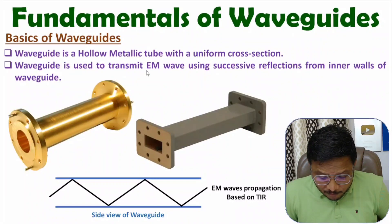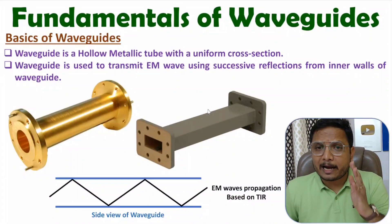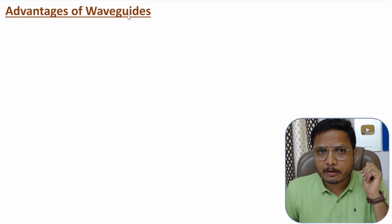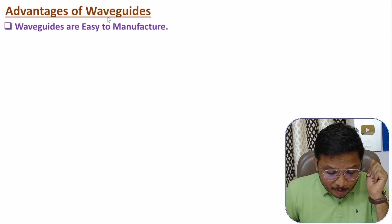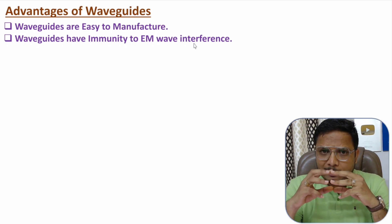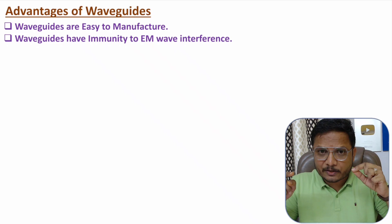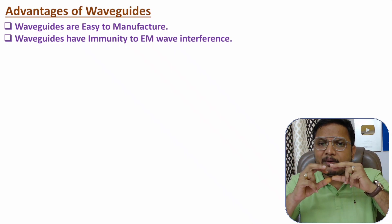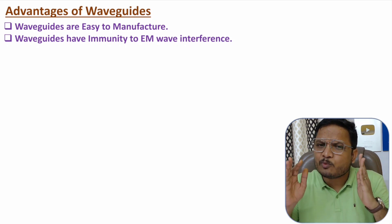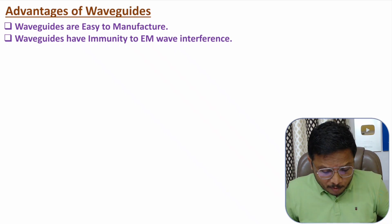Now I'll discuss the advantages of waveguides. Since a waveguide is simply a hollow metallic tube, the fabrication process is easy — it is easy to manufacture. Waveguides also have immunity to EM wave interference. Inside the waveguide there is total internal reflection, so from the exterior environment there will be minimum interference. EM wave interference with a waveguide is negligible, giving it higher immunity to EM wave interference.